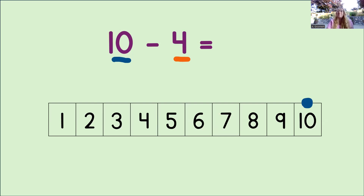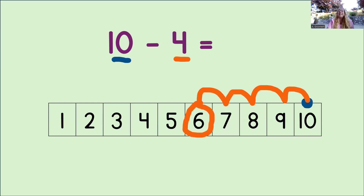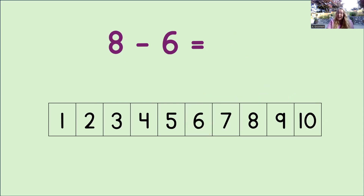Let's do that now: 1, 2, 3, 4. Where did we land? Yes, we landed on the number 6. So now we write that number into the equation. And we know 10 take away 4 equals 6. That's great.